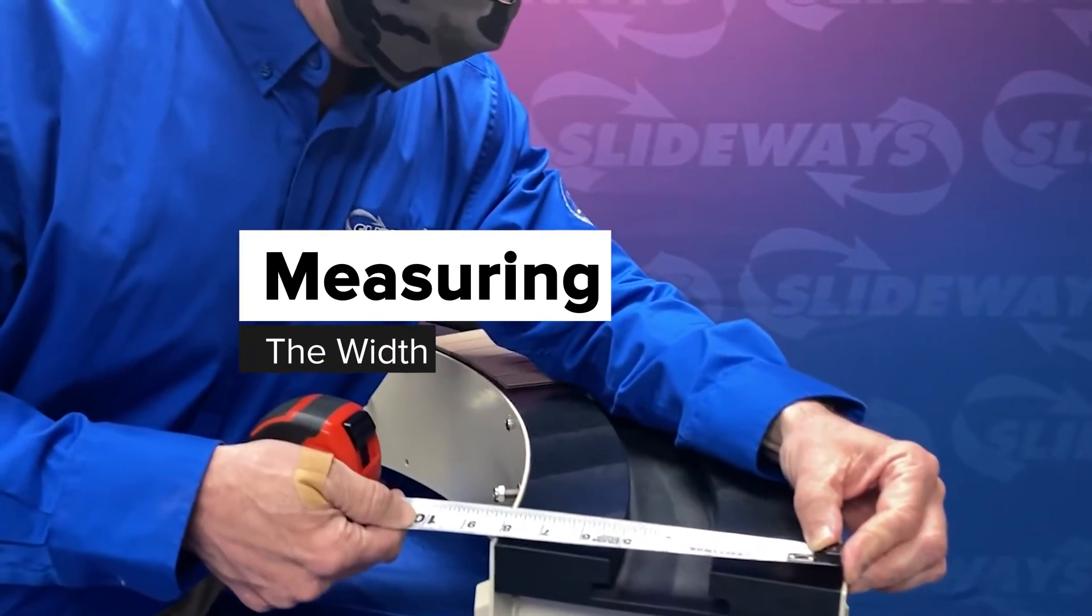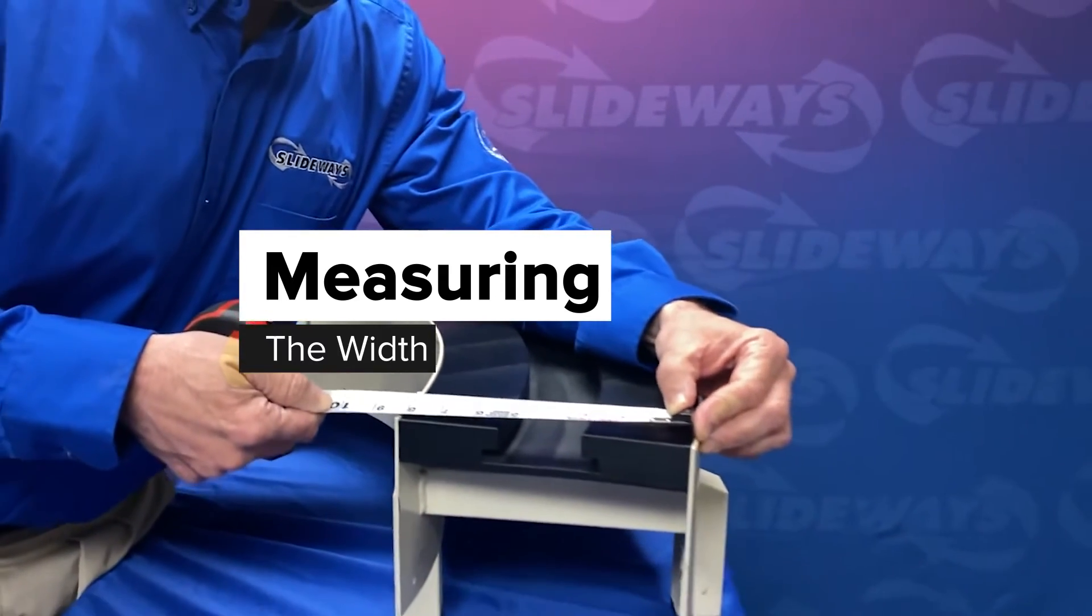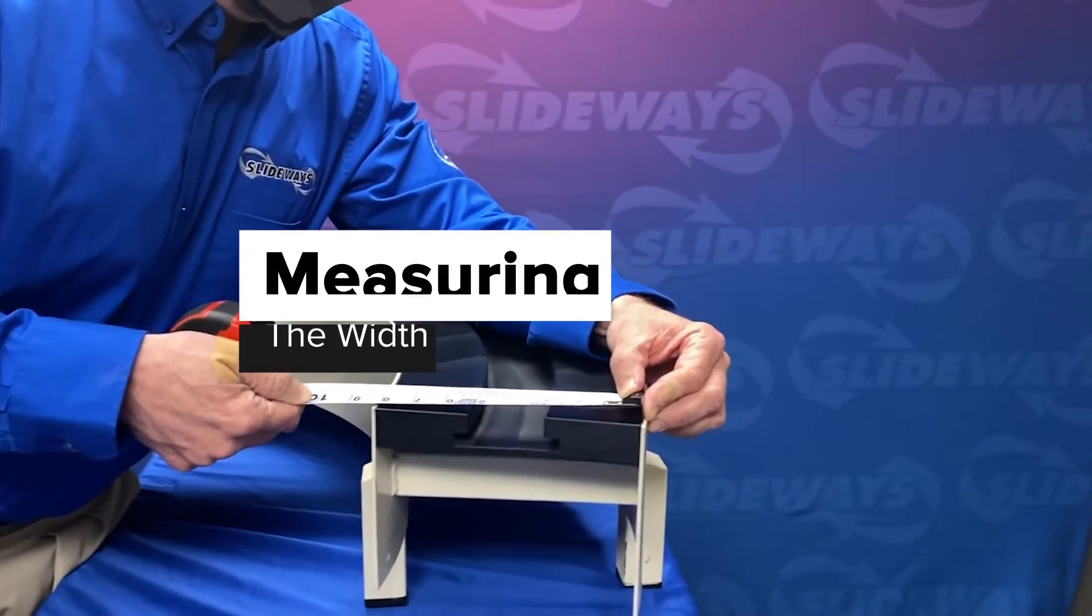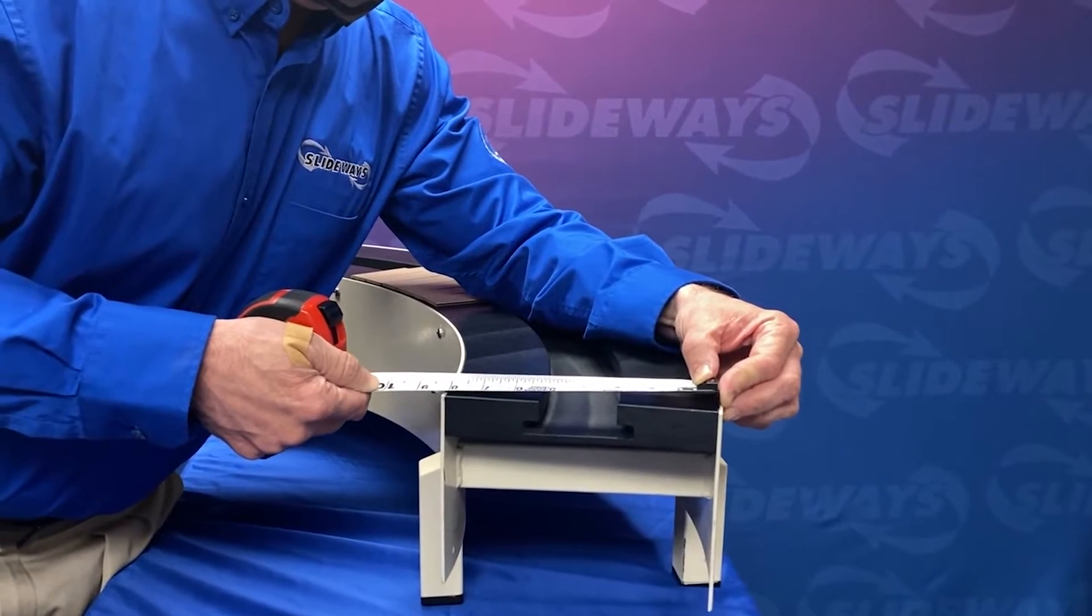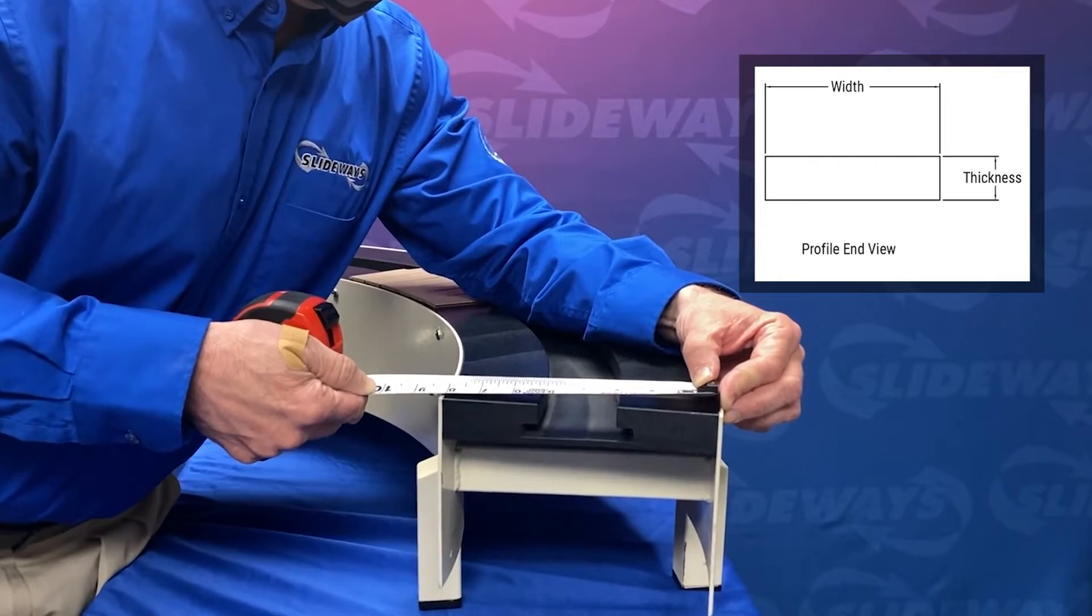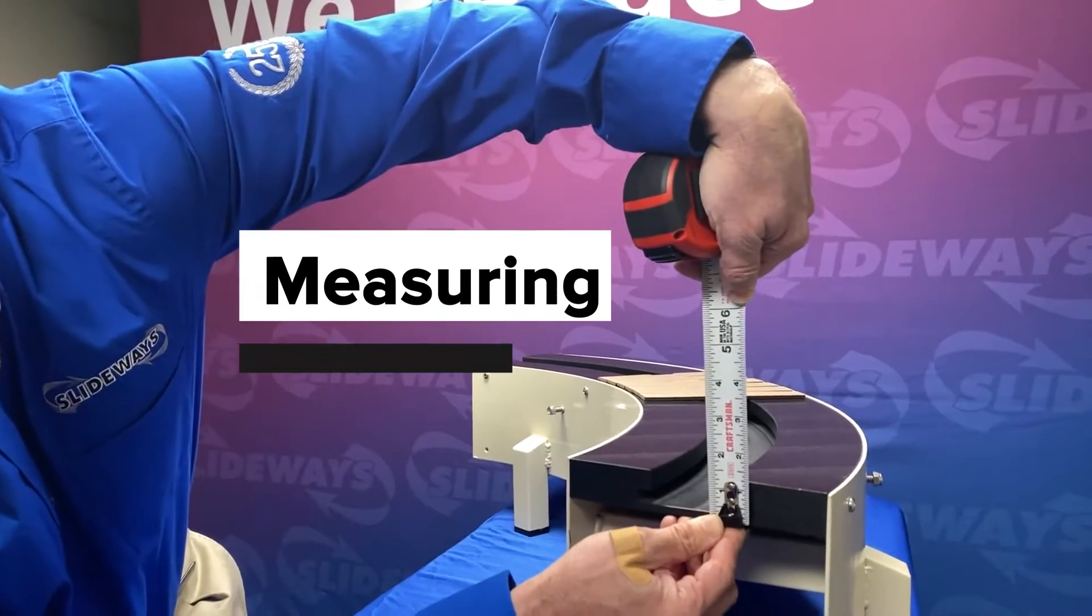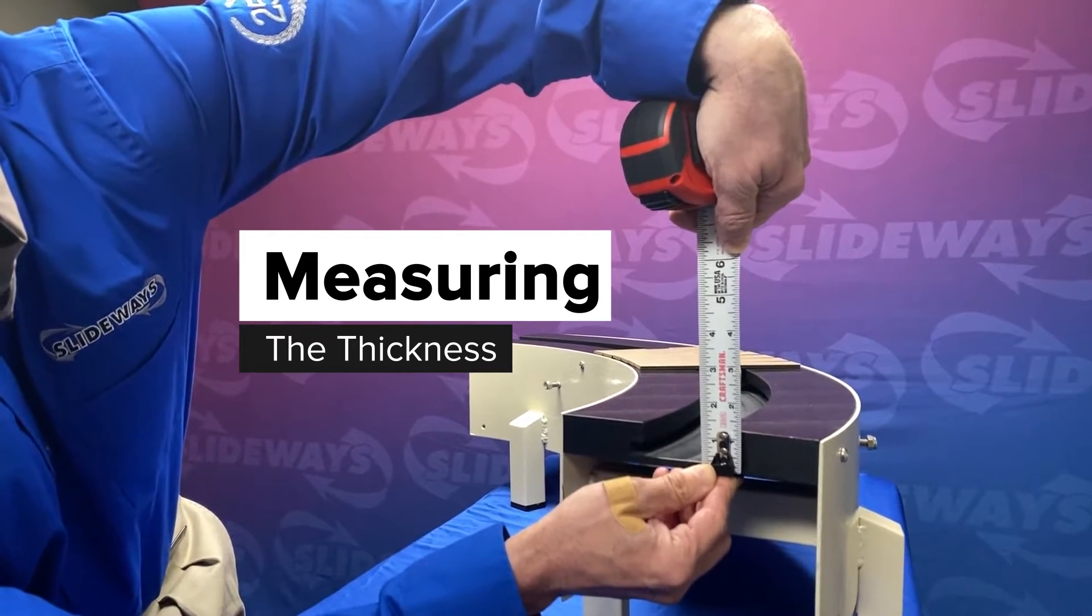Measuring the width: to measure the width of the curve, lay a tape measure across the width of the track. You only want the dimension of the track. Do not add any guarding or frame edges.